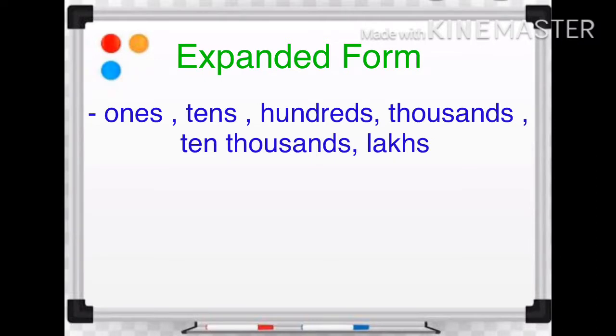Let's begin with expanded form. We can expand a number using two methods. Method number one: find out how many ones, tens, hundreds, thousands, ten thousands, and lakhs are there in the given number.